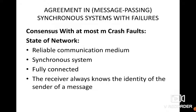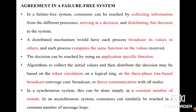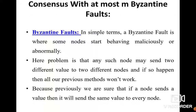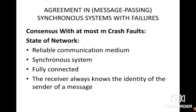The next topic is agreement in a synchronous system with failure. Unlike a failure-free system, here we study how agreement is achieved when failures can occur. We will cover two topics: consensus with at most m crash faults, and consensus with at most m Byzantine faults. The first is consensus with at most m crash faults.